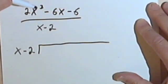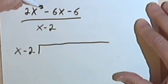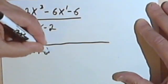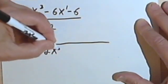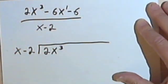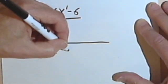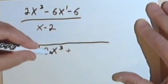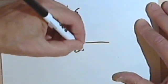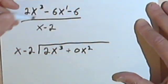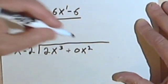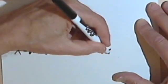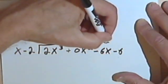The first thing I see is that when I look at my exponents, I've got a 3 and I've got the 1 here at the negative 6x, but I haven't got a 2. So I've got to remember to fill in a dummy exponent, a zero term. So this is going to be 2x to the third plus 0x squared, because I don't have an x squared, minus 6x minus 6.